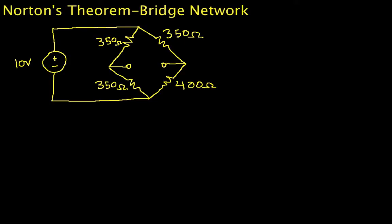Welcome to part two of the video example on finding the Norton's Theorem equivalent circuit for a bridge network. In part one, we found the Norton equivalent circuit by finding the open circuit voltage and the short circuit current, and then finding the Thevenin equivalent resistance, which is also the Norton equivalent resistance, as the ratio of the two.